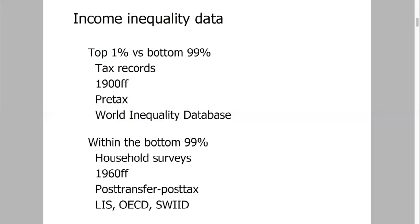Household survey data are available for the United States going back to about 1947-48, but for most other countries only from 1960 or even later. These data in most cases take into account government transfers and most types of taxes subtracted. The LIS data come in originally five-year intervals, then four, and now down to three-year intervals for many countries.